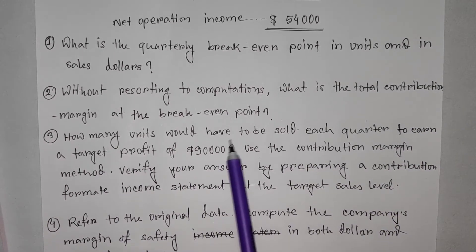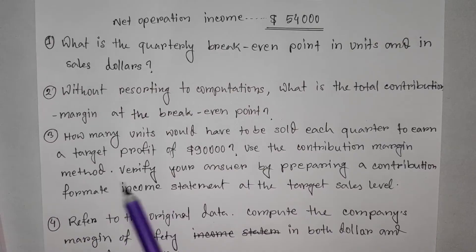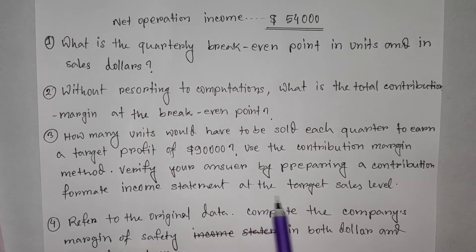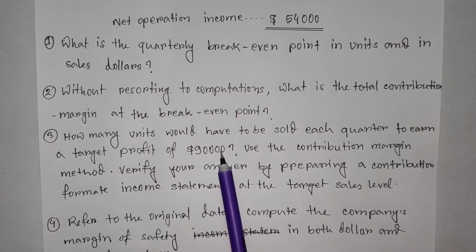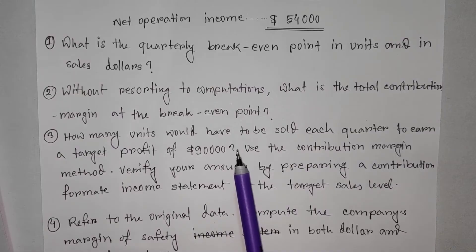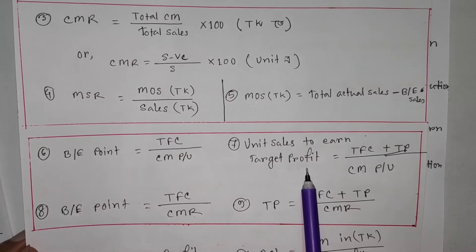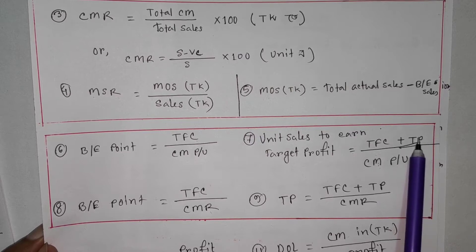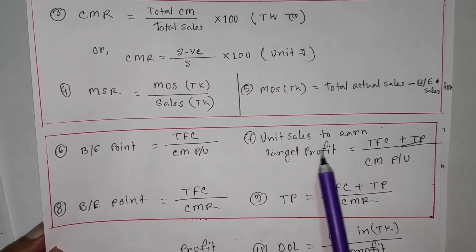How many units would have to be sold each quarter to earn a target profit of $90,000? Use the contribution margin method, and verify your answer by preparing a contribution format income statement at the target sales level. So the target profit is $90,000, and total fixed cost divided by CM per unit gives units needed.